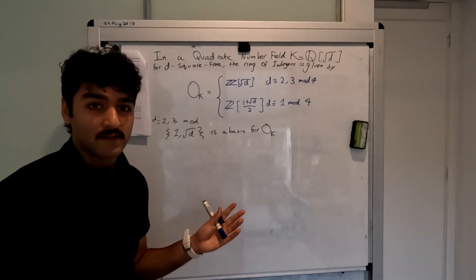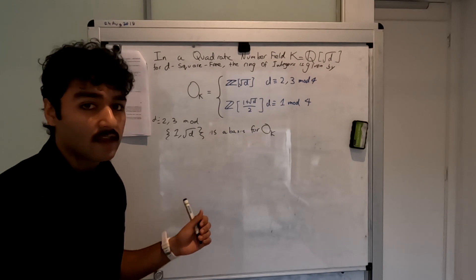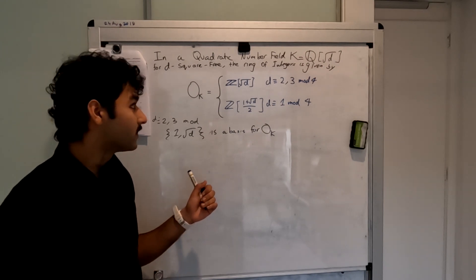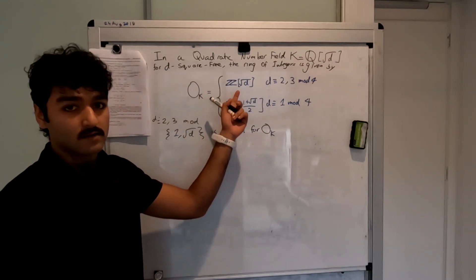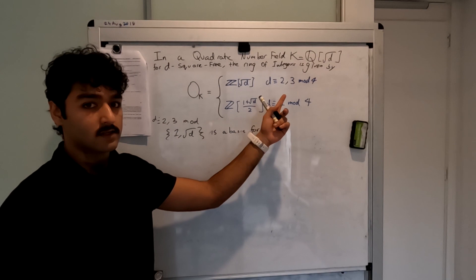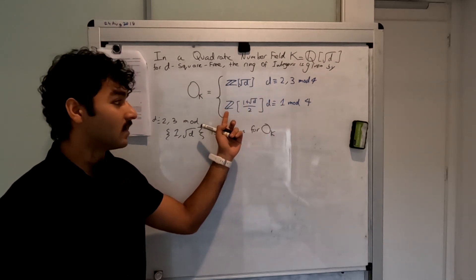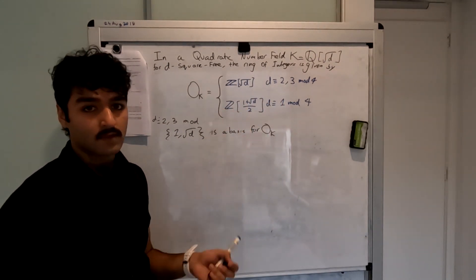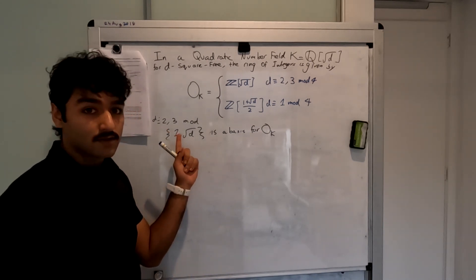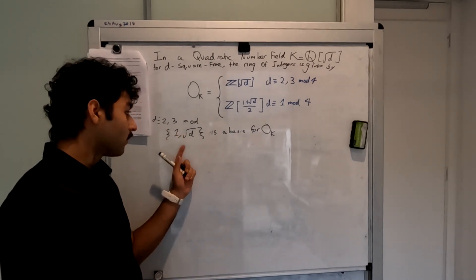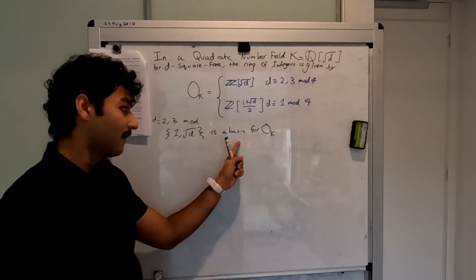Let's find the discriminant in a quadratic number field. Recall that in a quadratic number field, the ring of integers is given by Z[√d] when d is congruent to 2 or 3 mod 4, and otherwise by Z[½(1 + √d)]. When d is congruent to 2 or 3 mod 4, we have that {1, √d} is a basis for O_k.